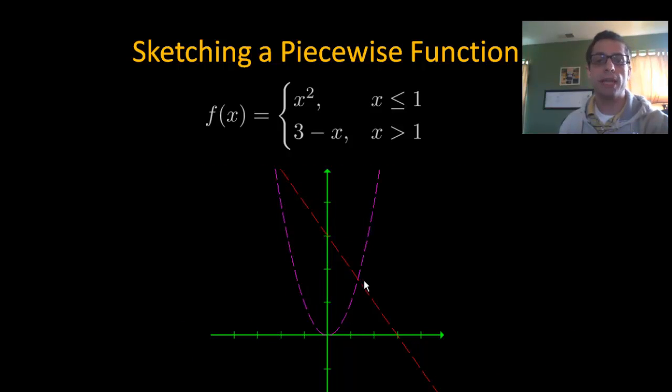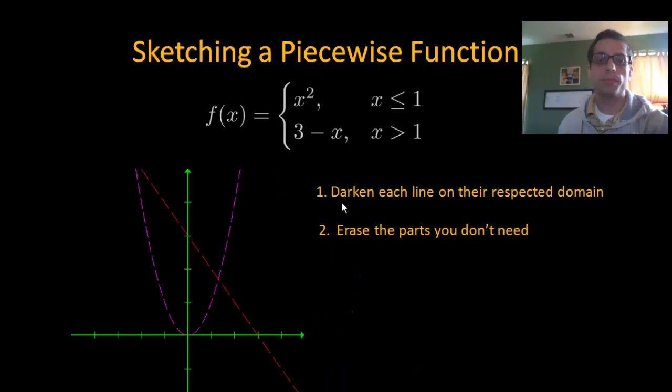So I have both graphs on the same one. And what I'm going to do is I'm going to darken each line on their respected domain. So here's the respected domain of x squared, and here's the respected domain of 3 minus x. And then you erase the parts you don't need.